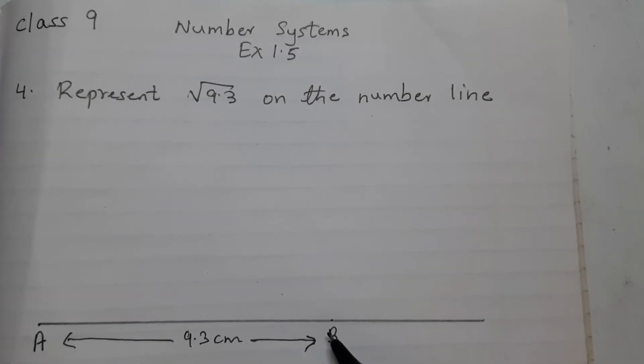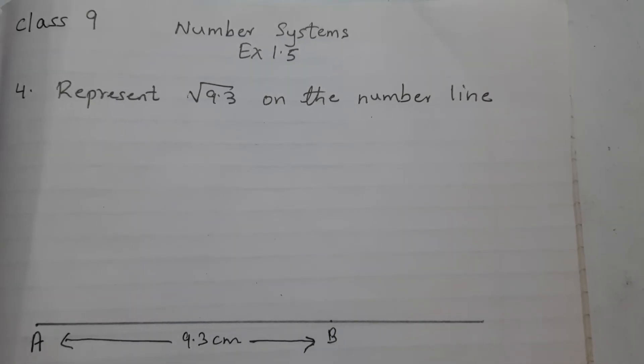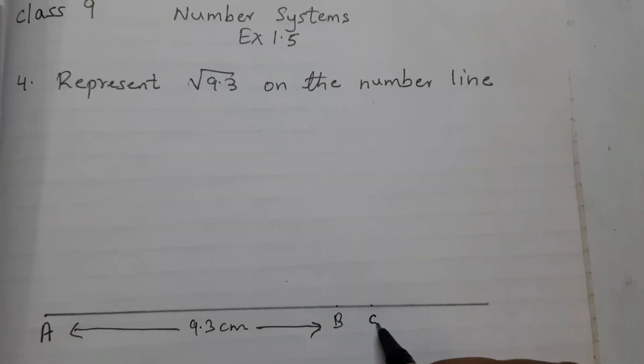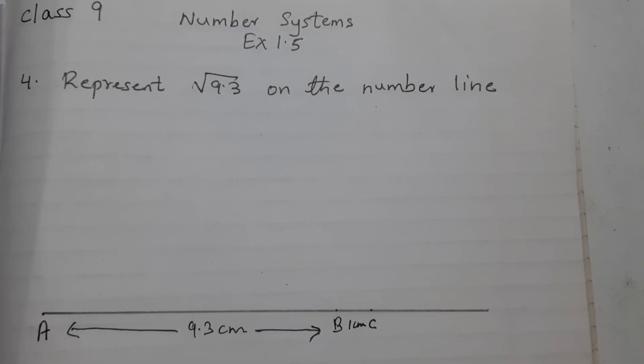From B, mark a distance of 1 cm, let this point be C, so this is 1 cm. Find the midpoint of AC.